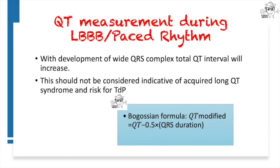How do we measure the QT interval during wide left bundle branch block or a paced rhythm? Conduction delay is often associated with lengthening of the QT interval. Bogossian and colleagues showed that QT prolongation caused by left bundle branch block constitutes approximately 48.5% — nearly 50% — of the QRS width. In the Bogossian formula, the QRS duration is divided in half and this value is subtracted from the measured QT. This is the formula to use for patients who have left bundle branch block or are paced.